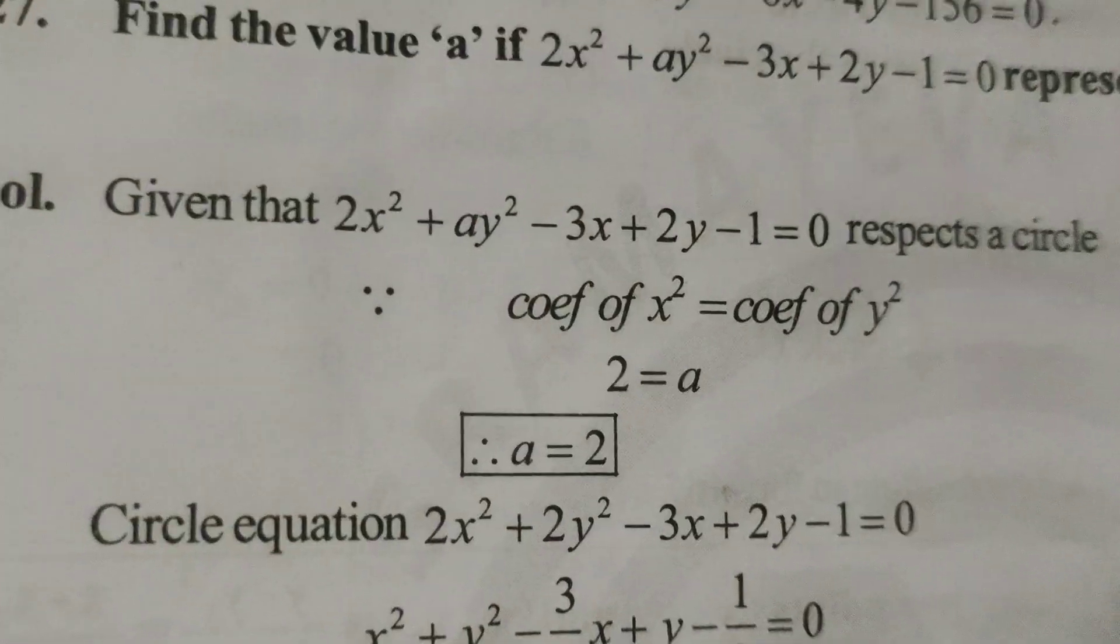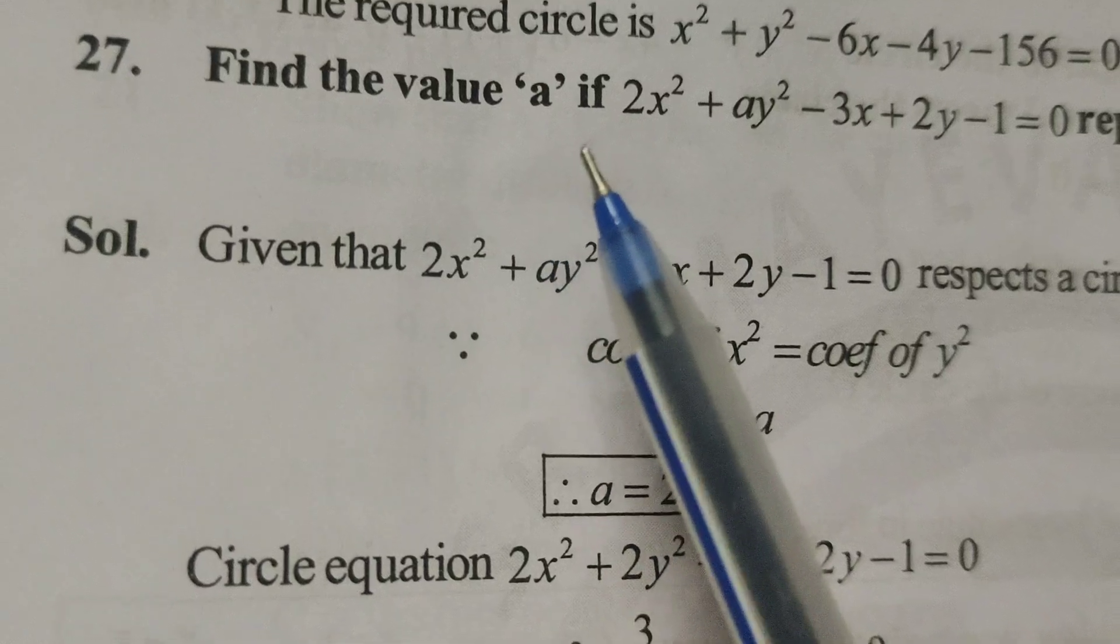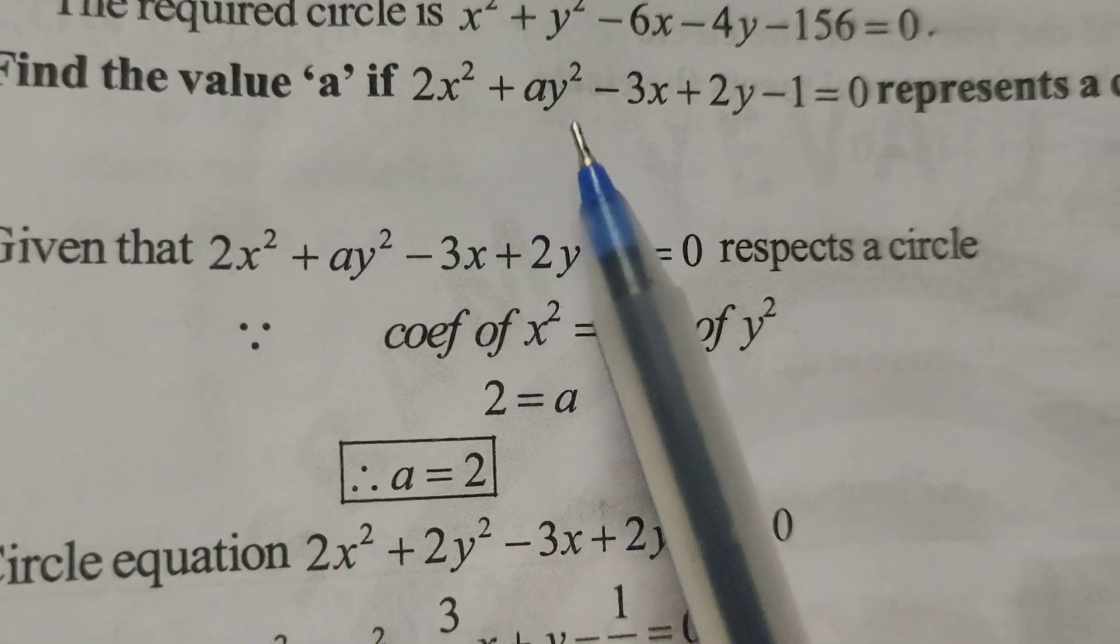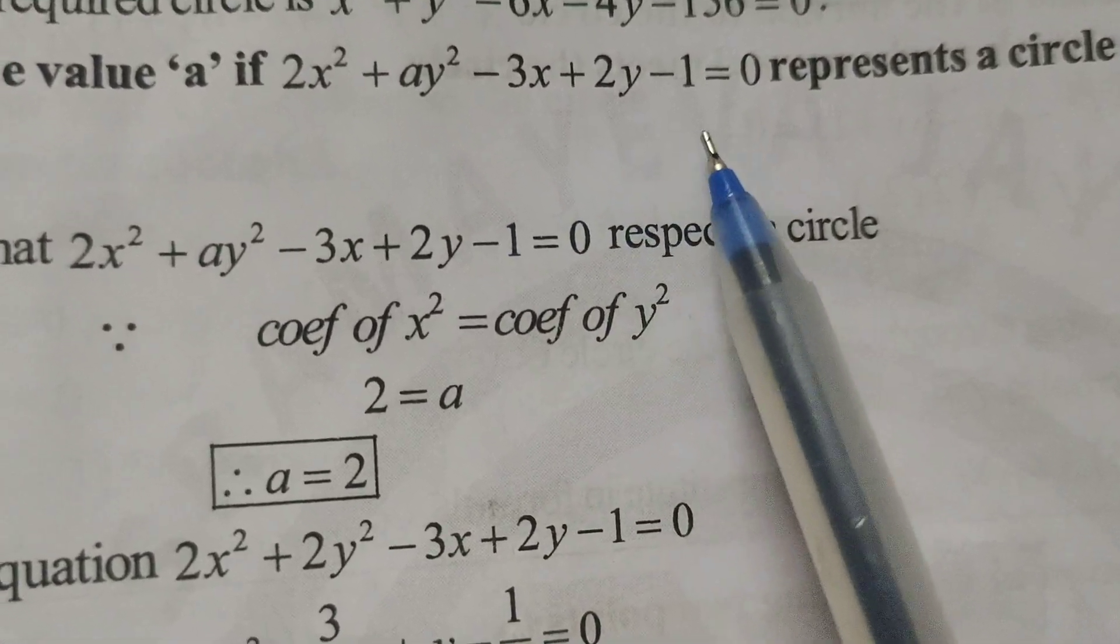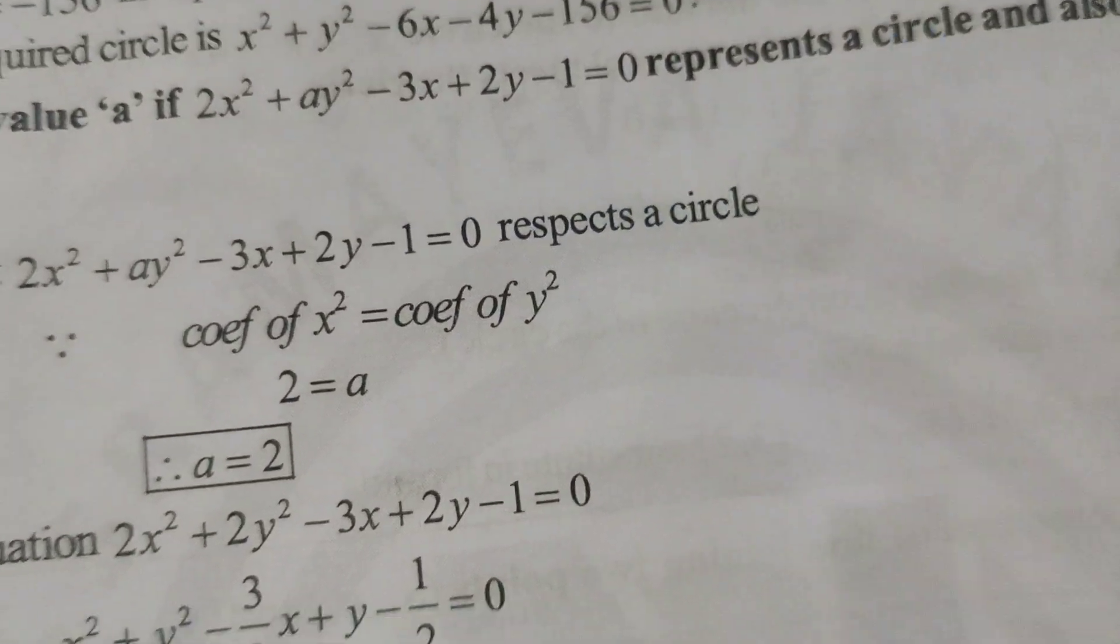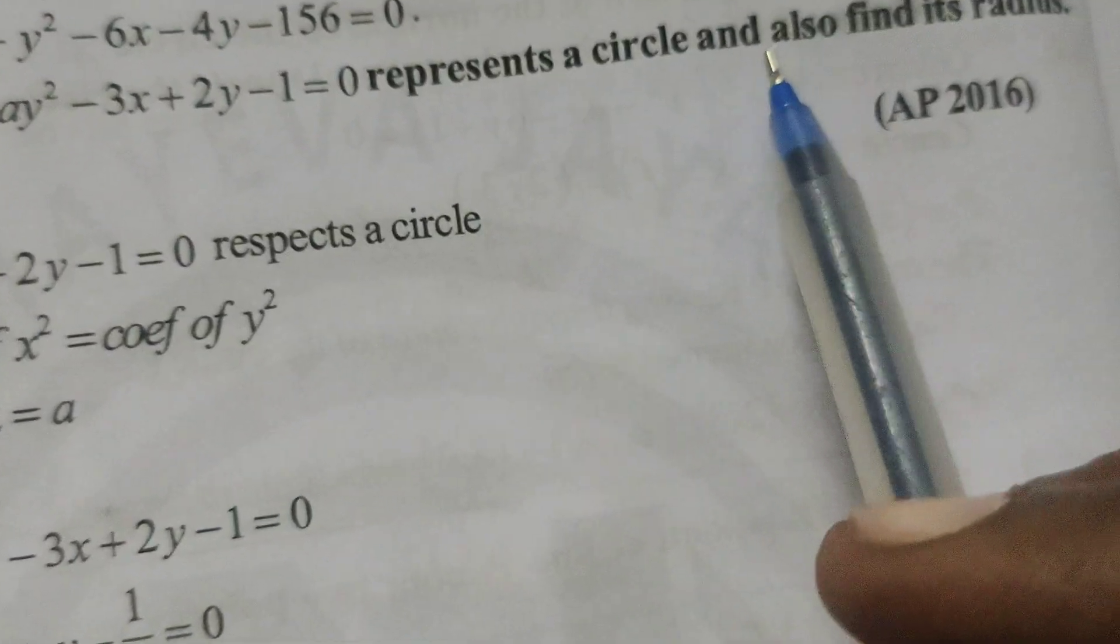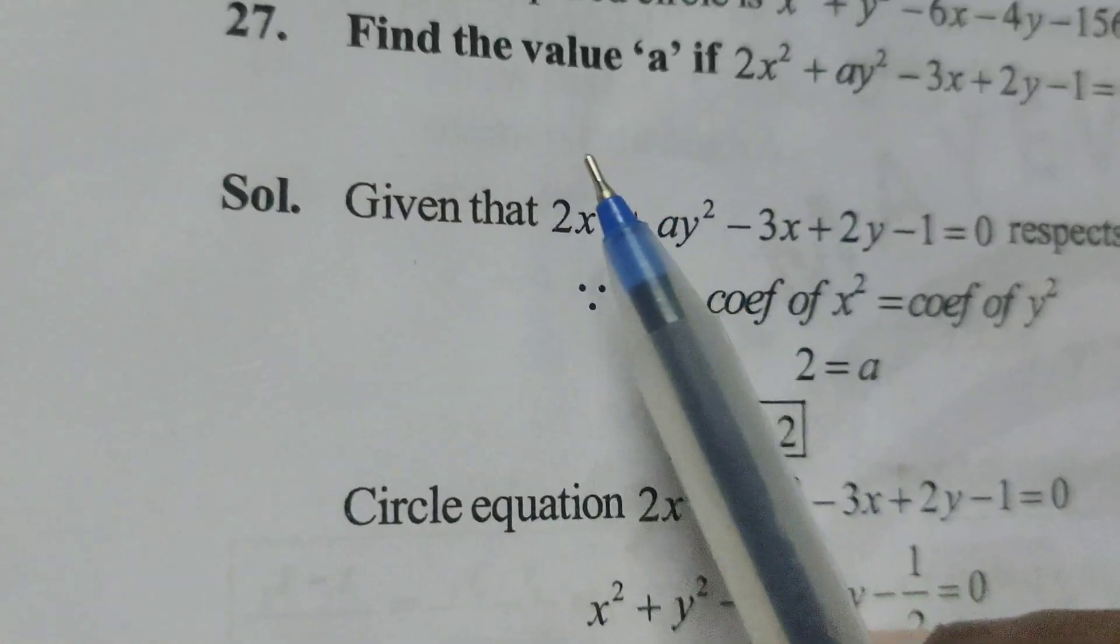Hi everyone, this is Dr. Yuti. Now, today we are going to explain, find the value of A if 2x square plus Ay square minus 3x plus 2y minus 1 equals to 0. Here, in this equation, represents a circle and also find the radius.